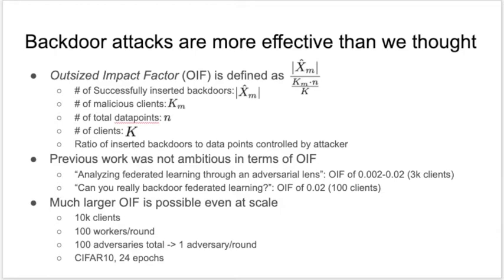We compare the OIFs of previous works — "Can you really backdoor federated learning" and "Analyzing federated learning through an adversarial lens" — and observe that they both have OIFs much smaller than one. We evaluate the attack at scale and observe large OIFs.